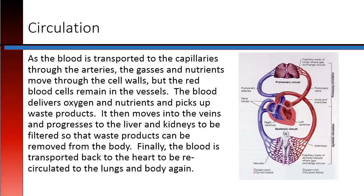The blood delivers oxygen and nutrients and picks up waste products. It then moves into the veins and progresses to the liver and kidneys to be filtered so that waste products can be removed from the body. Finally, the blood is transported back to the heart to be recirculated to the lungs and body again.